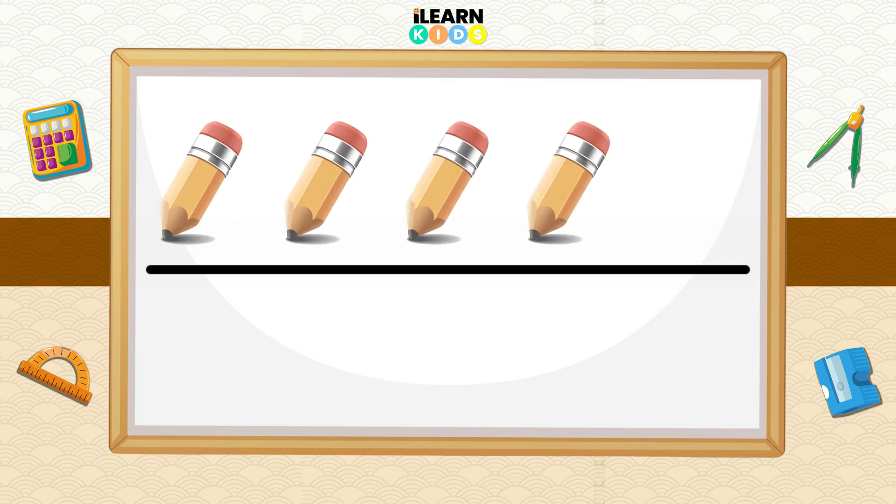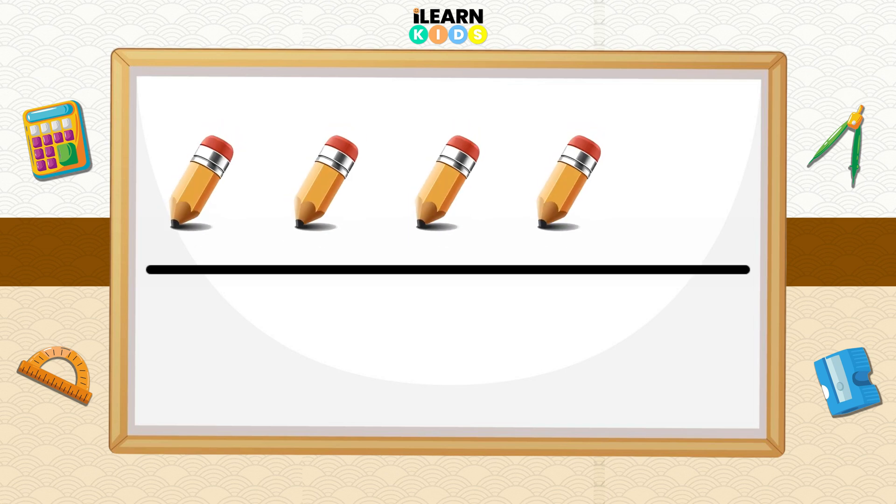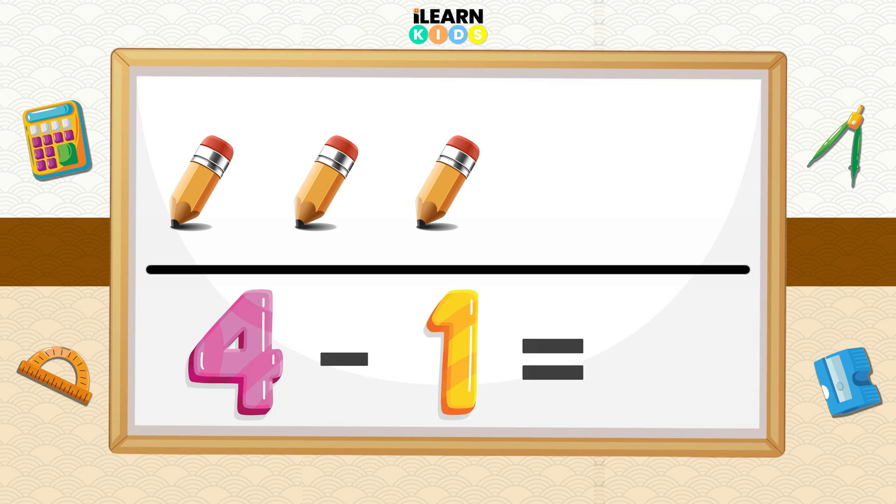Let's try another one. I have four pencils and I give away one. How many pencils do I have left? Can we count it together? One, two, three. That's correct! Four take away one equals three.